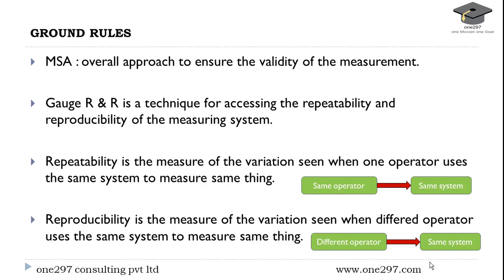The third step is ground rules. In this, MSA — measurement system analysis — is to be used to avoid any variation in your data. MSA is an overall approach to ensure the validity of the measurement. Gauge R&R is a technique for assessing the repeatability and reproducibility of the measuring system. Repeatability is the measure of the variation seen when one operator uses the same system to measure the same thing.